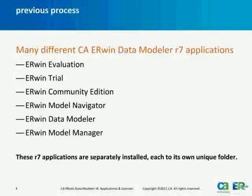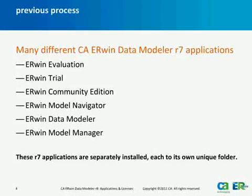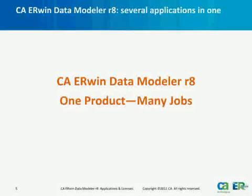With prior versions of CA Irwin Data Modeler, it was often necessary to install several different versions of Irwin applications on one workstation. For example, an Irwin R7 workstation could have installations of each of the R7 applications shown here, making it possible to have six separate installations of R7 applications on a single workstation.